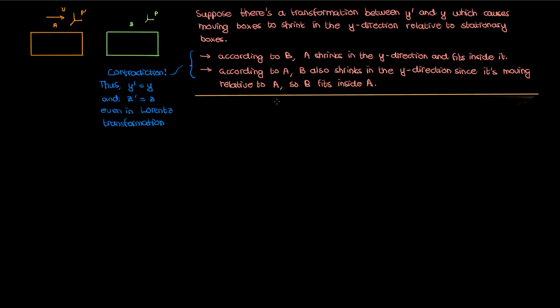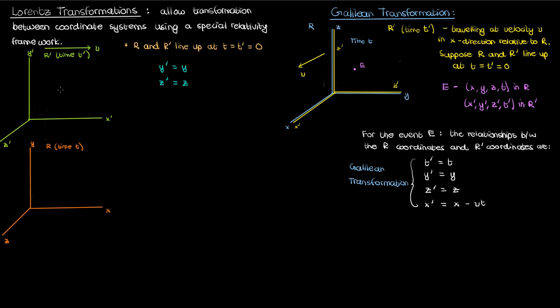I can make the exact same argument for the z coordinate also, so just like y' and y, z' and z are equal. By the way, this is called the symmetry argument. Anyway, we've shown the relationships for the uninvolved coordinates y and z. Let's go back to the important coordinates x and t for the Lorentz transformation.